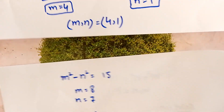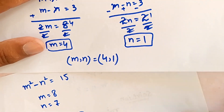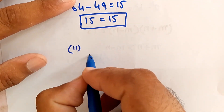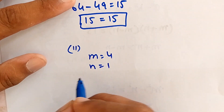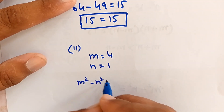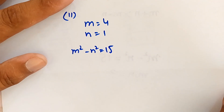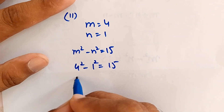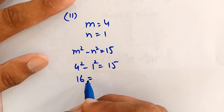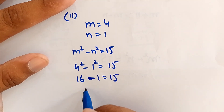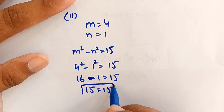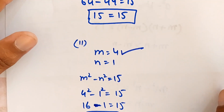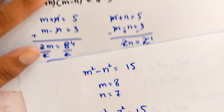For case two, m equals 4 and n equals 1: substituting gives 4 squared minus 1 squared, which is 16 minus 1, which equals 15. This confirms the case two values are also correct. Thank you for watching, please subscribe to the channel.